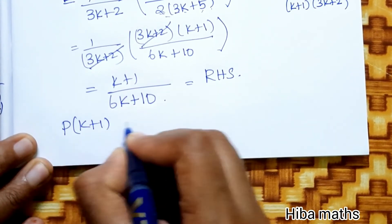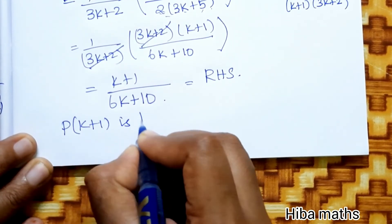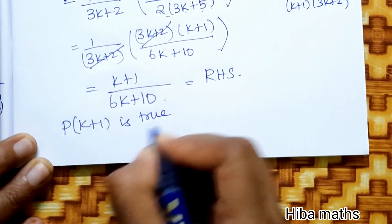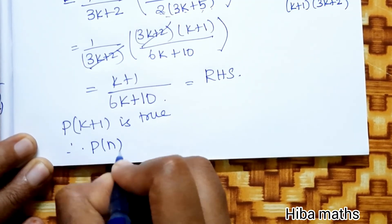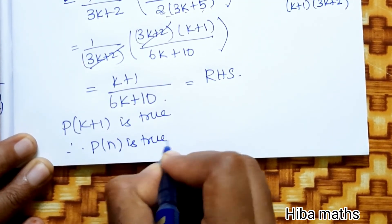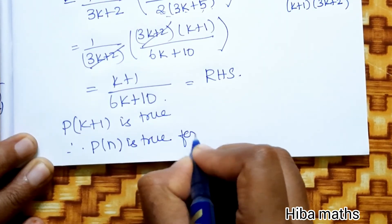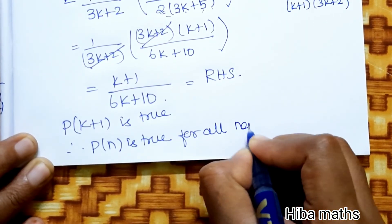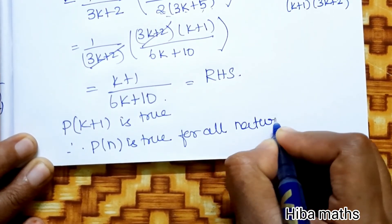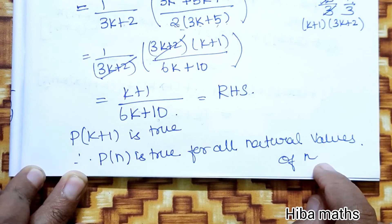Therefore P(K+1) is true. Hence by the principle of mathematical induction, P(N) is true for all natural numbers N. If you have any doubt, please write in the comment section. Thank you so much for watching.